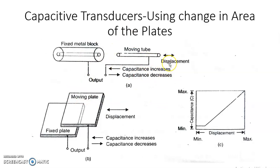As seen in the diagram, we are measuring the physical quantity displacement in terms of change in capacitance. In the first case, the parallel plates of the capacitor are in the form of metal tubes — one metal tube contains another, with a dielectric medium in between. As the inner metal tube is moved inside, the overlapping area increases and therefore the capacitance increases, allowing displacement to be measured.